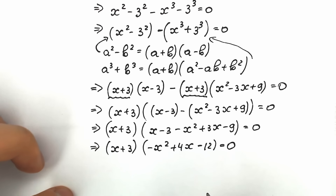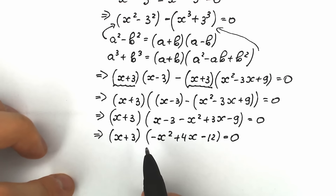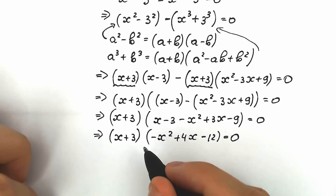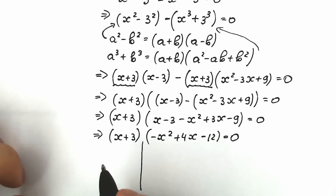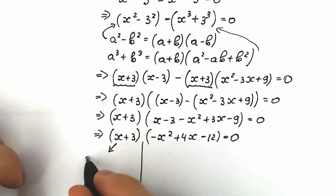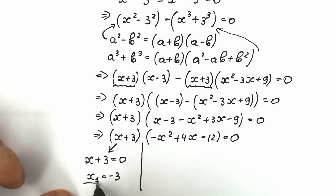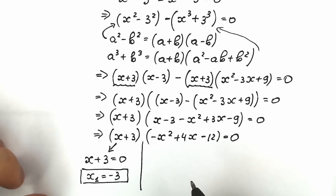We have factored our challenge — really great. The product of two parentheses equals 0, so either the first parentheses equals 0 or the second equals 0. For the first case: x plus 3 equals 0, which gives us x₁ equals minus 3. We've found our first root. We'll check it a little bit later. Now let's solve the second quadratic equation.